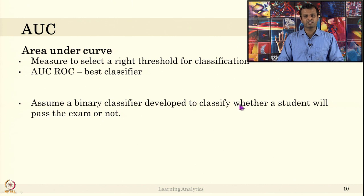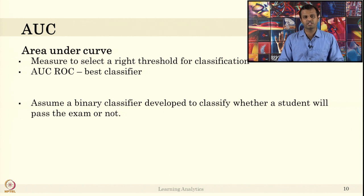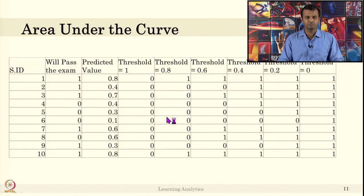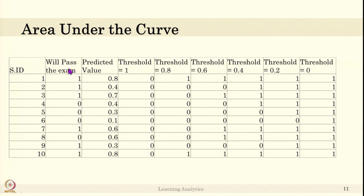Assume a binary classifier developed to classify whether a student will pass the exam or not. But the classifier response is not simply 0 or 1; instead it gives a probability value of being 1 or 0, such as 0.8, 0.7, 0.1, or 0.2. Consider this table: there are 10 students. The true values show some students pass (1) and some do not (0). Instead of predicted values being 1 or 0, the classifier gives probability values like 0.8, 0.4, 0.7.